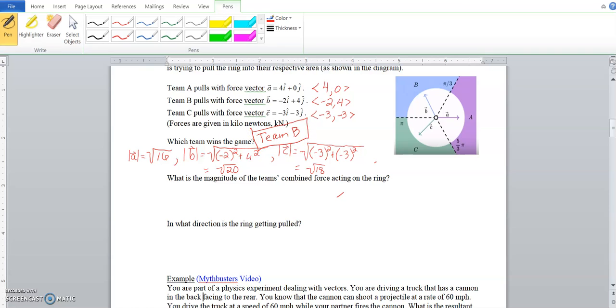Okay, so what is the magnitude of the team's combined force acting on the ring? We're really searching for here the magnitude of the resultant A plus B plus C. So the first thing we're going to do is find just what is vector A plus B plus C, our resulting vector. Since it's in component form, standard position, we get to just add the i terms, or in component form at our x terms. So 4 plus negative 2 plus negative 3 is our resulting x term, and then 0 plus 4 minus 3 is our resulting y term. So if I write this out in this form, 4 minus 2 is 2, 2 minus 3 is negative 1.